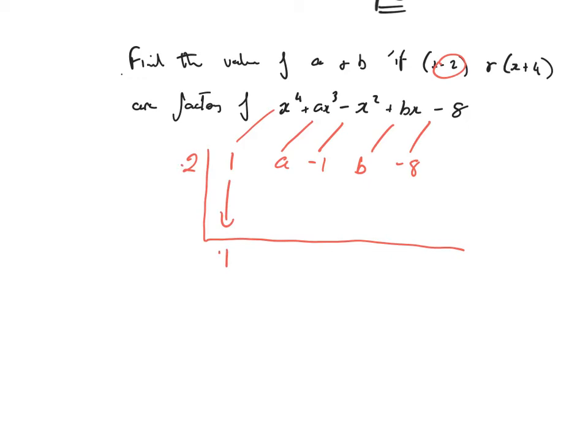Drop the one down. 1 times 2 is 2. 2 plus a, a plus 2, a plus 2, a plus 2 times 2, take your time, 2a plus 4, 2a plus 4 minus 1, 2a plus 3, 2a plus 3 times 2, 4a plus 6, 4a plus 6 plus b. That's just 4a plus 6 plus b. Nothing more to do there.